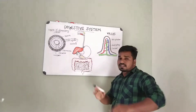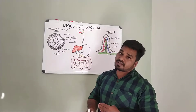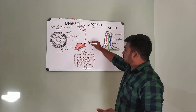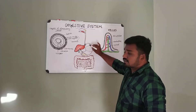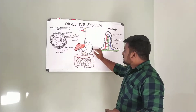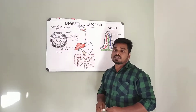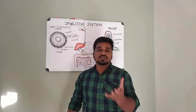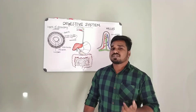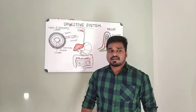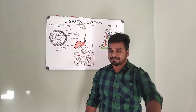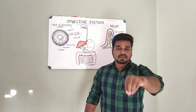The stomach has curvatures: the lesser curvature, the greater curvature, and the greater omentum. The stomach produces gastric juice, which contains water, mucus, hydrochloric acid, and intrinsic factor. Intrinsic factor, secreted by parietal cells, is essential for the absorption of vitamin B12.